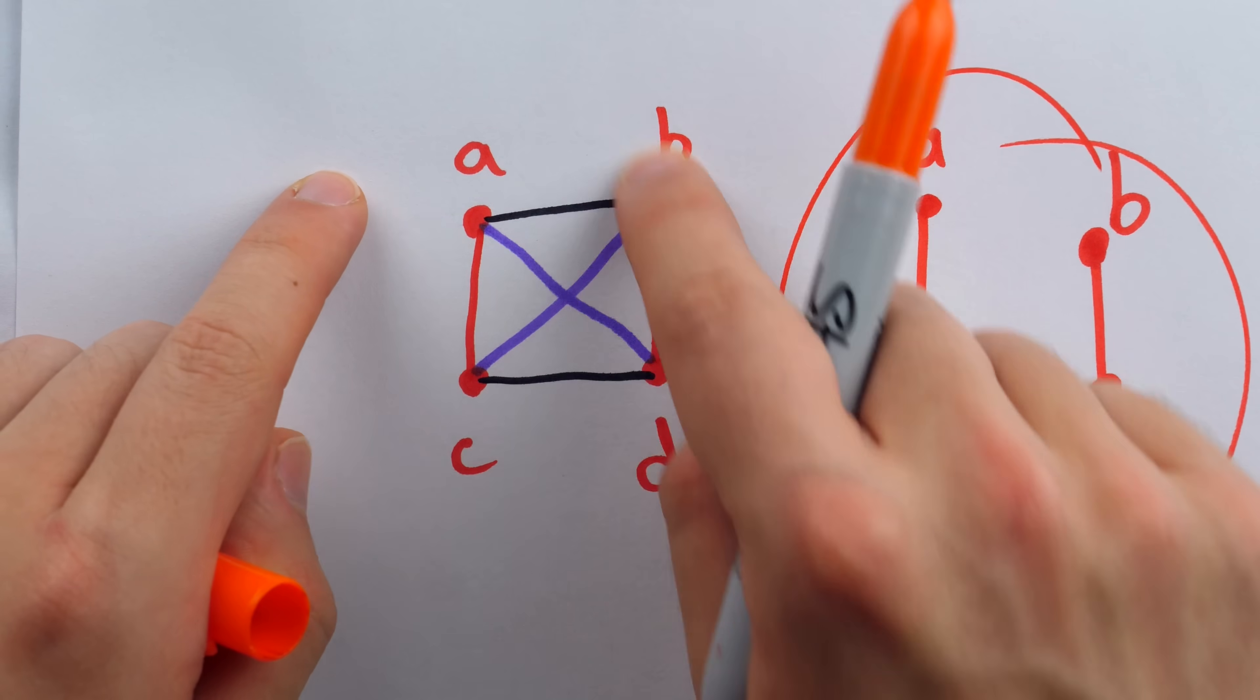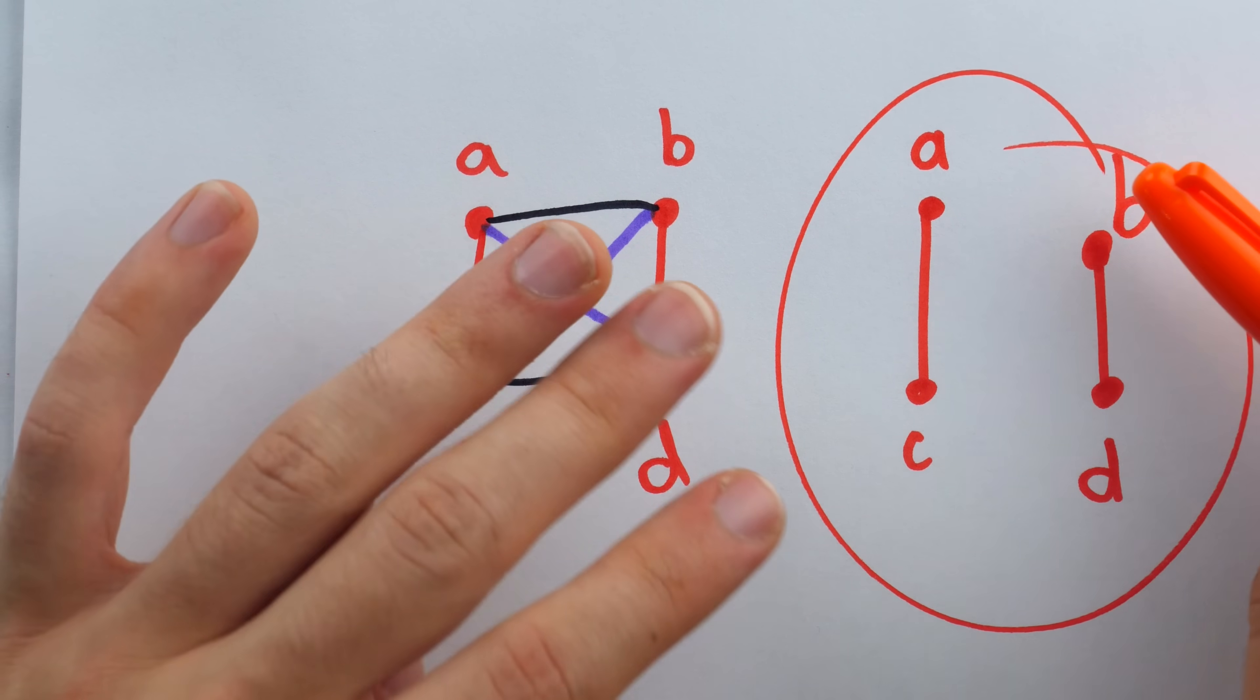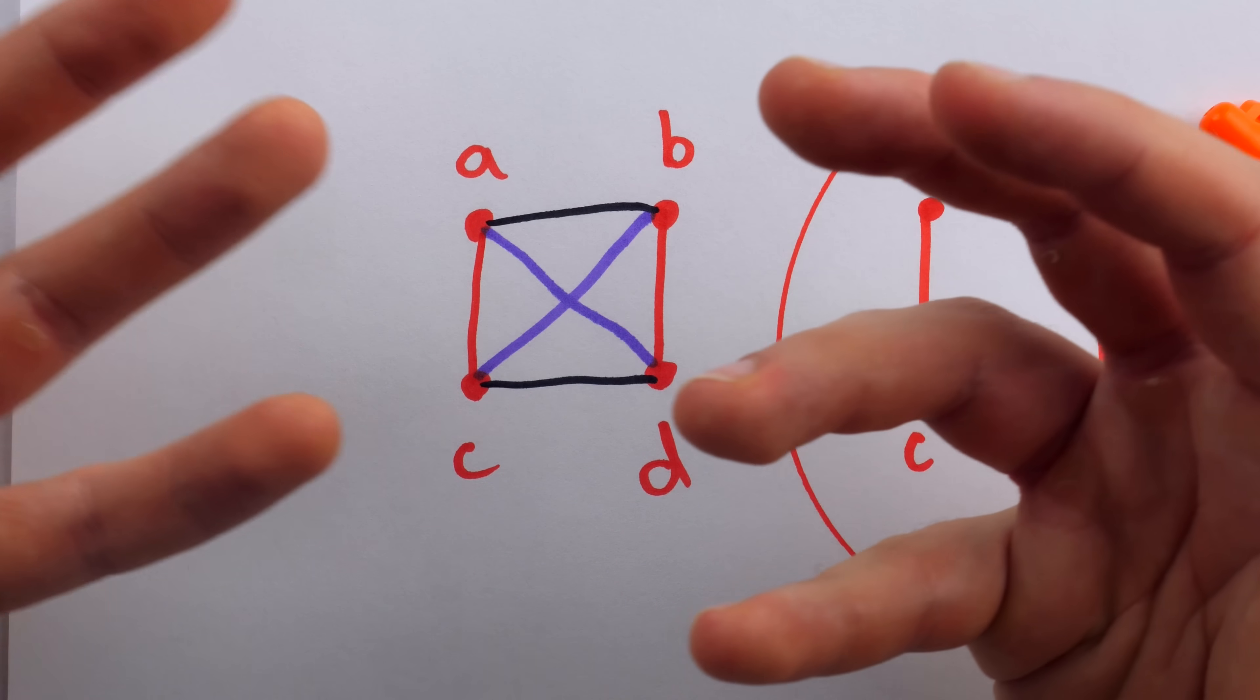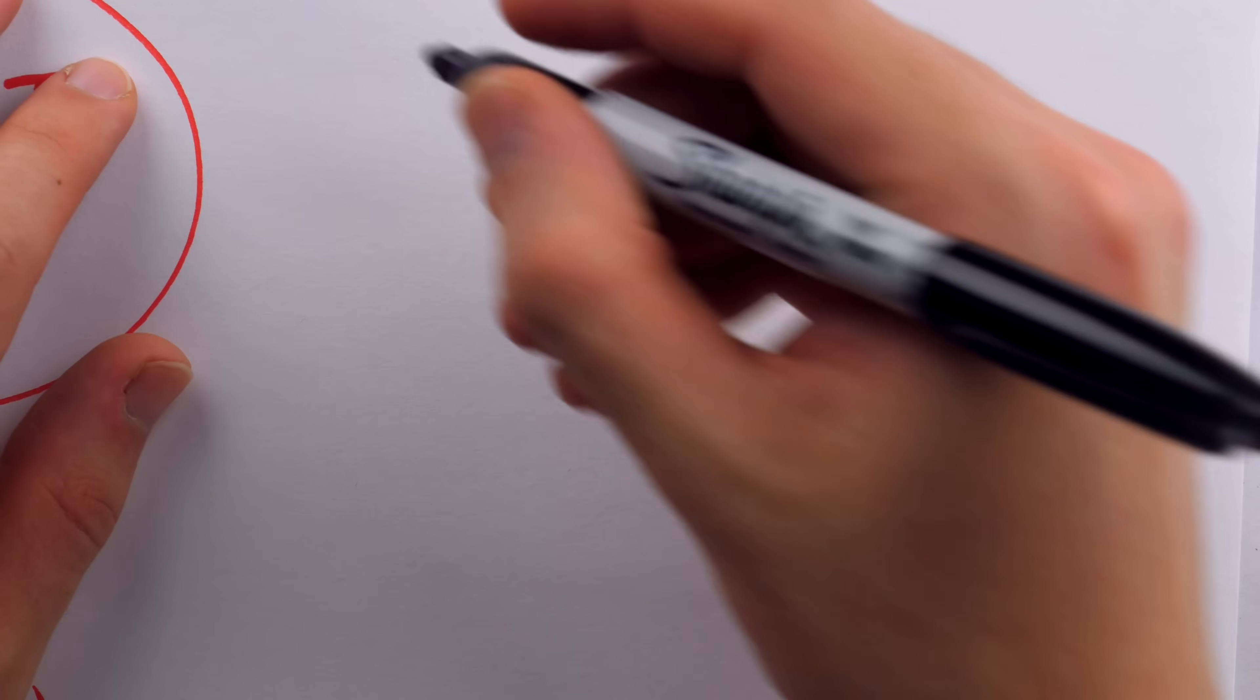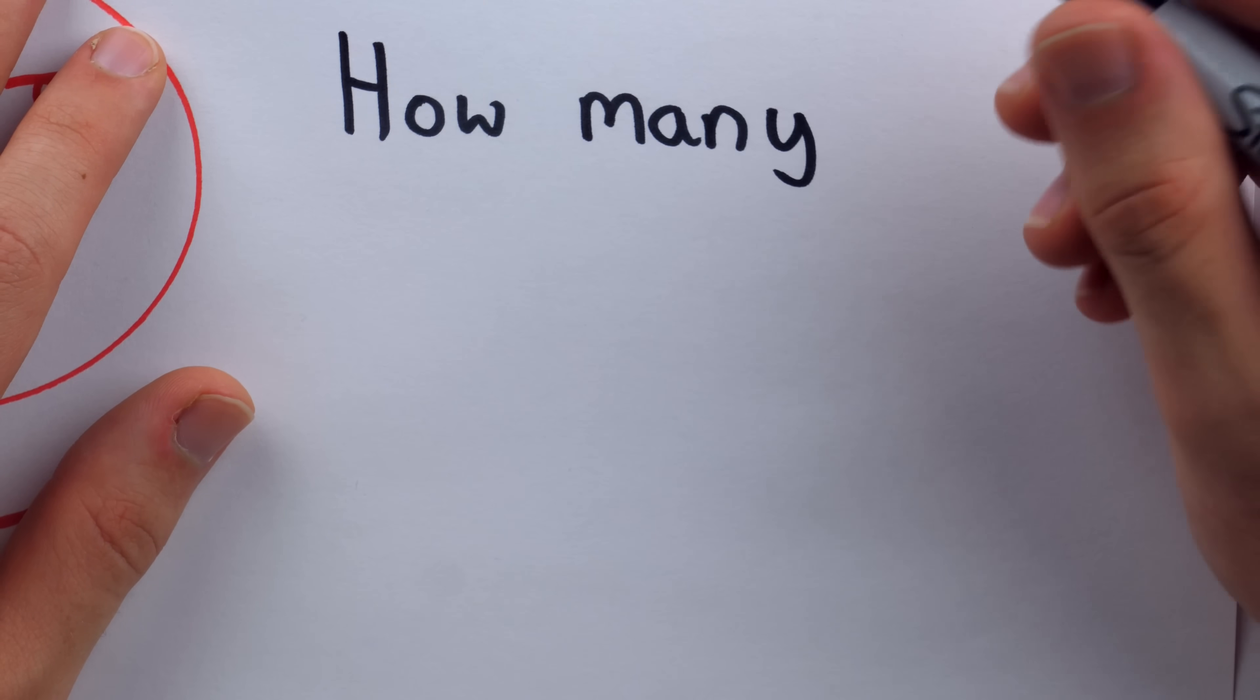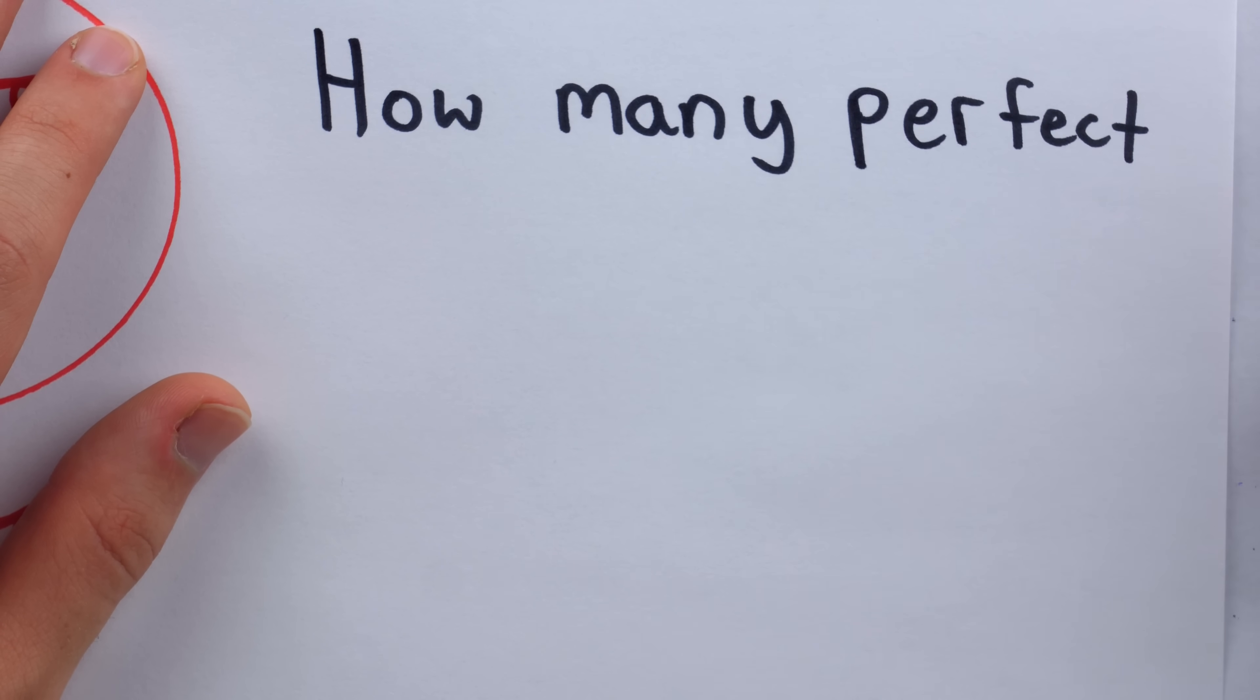But if we have a complete graph, like this guy here, which has all of the edges, you see we have several possibilities for perfect matchings. But also, that's only possible if we have an even number of vertices. Like in this case, we have four. If you have five vertices, or seven vertices, or nine vertices, no matter how you try to match things together, there's always going to be at least one vertex left out. So then that leads to our question, which is, how many perfect matchings does a complete graph on, let's say, N vertices have? Where, of course, N has to be even for it to have any perfect matchings at all.